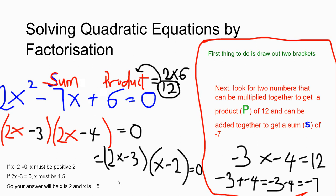Now we're going to solve. Before we solve, look at the two brackets — is there any bracket that can be simplified? Yes. This 2x minus 4 bracket can be simplified: when you simplify it, you get 2 times the bracket (x minus 2). The first bracket remains the same. So, if x minus 2 is 0, x must be positive 2.